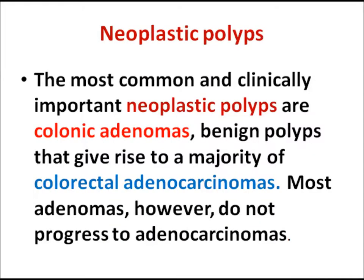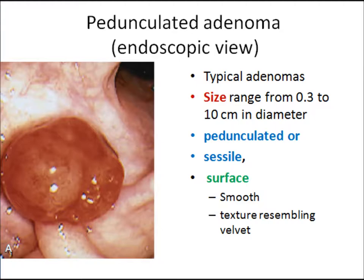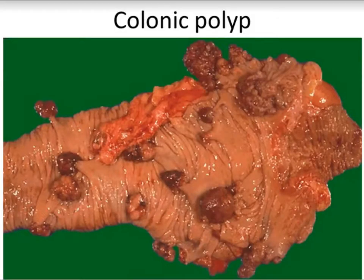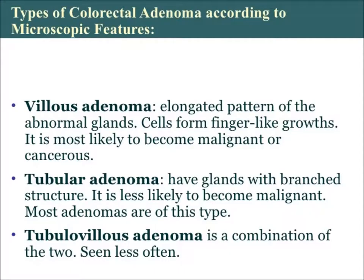The commonest neoplastic polyps are colonic adenomas — benign polyps that give rise to the majority of colorectal adenocarcinomas; however, most are benign. They may be solitary and pedunculated, ranging from 3 to 10 cm in diameter, with a smooth or velvety surface. They may be solitary or, as you can see here, multiple colonic polyps.